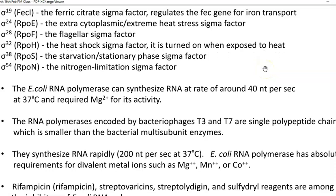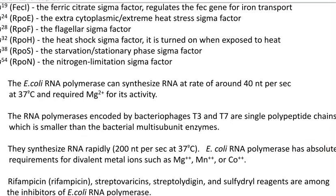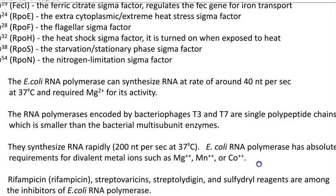In E. coli, RNA polymerase can synthesize RNA at a rate of around 40 nucleotides per second at 35 degrees centigrade, and it requires magnesium ion for its activity. RNA polymerases encoded by bacteriophages such as T3 and T7 are single polypeptide chains, smaller than the bacterial subunit enzymes. These bacteriophage-based RNA polymerases can rapidly synthesize RNA — 200 nucleotides per second at 37 degrees centigrade. E. coli RNA polymerase also has an absolute requirement for divalent metal cations such as magnesium, manganese, and cobalt.